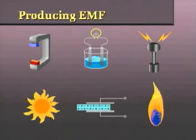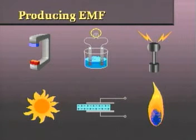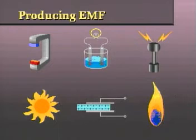Next, in producing EMF, we will discuss the six primary sources of energy: magnetic, chemical, friction, light, heat, mechanical pressure, and heat energies.